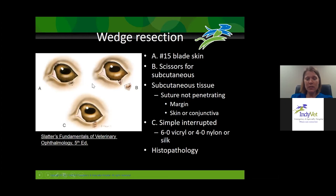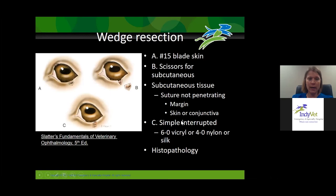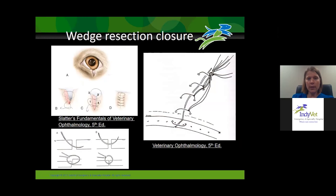I usually close the subcutaneous tissue with just one simple interrupted suture — something absorbable like 6-0 Vicryl. You don't want anything too stiff that could cause a corneal ulcer if it rubs through. When doing your subcutaneous suture, don't penetrate the eyelid margin, skin, or conjunctiva — just get the subcutaneous tissue and make sure the knot is buried within the eyelid. Then I do a simple interrupted to close the eyelid margin. I do recommend histopathology to confirm complete excision and identify the tumor type.